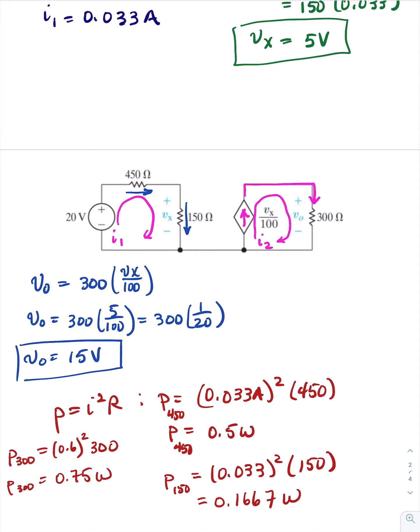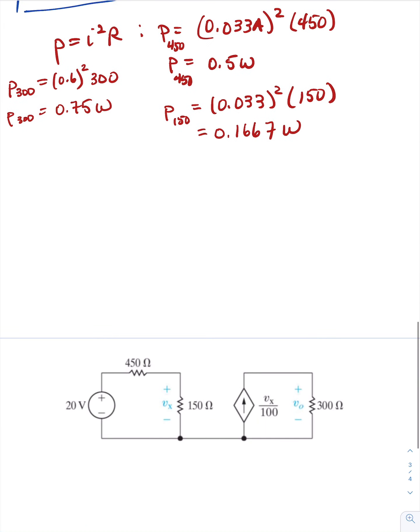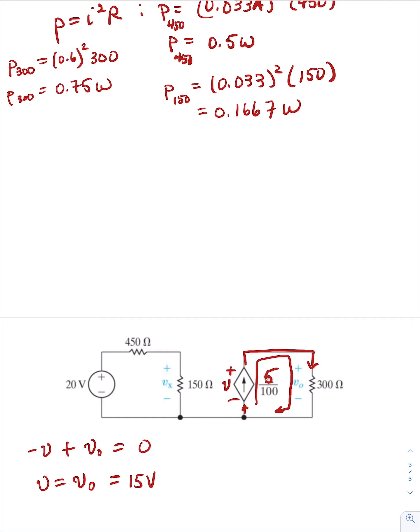That takes care of our resistors, but what about our power sources? We know that this is 5 here. What is the voltage across this current source? We could apply KVL here. Minus V plus V sub zero equals zero. So V equals V sub zero, which we said was 15 volts.